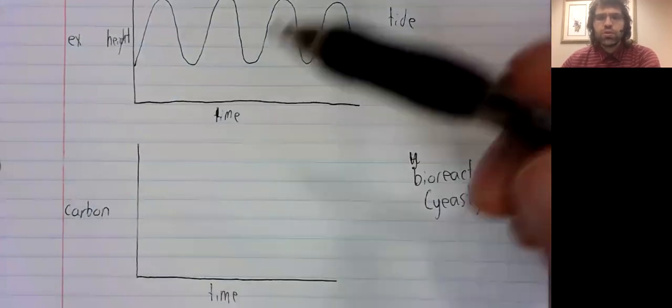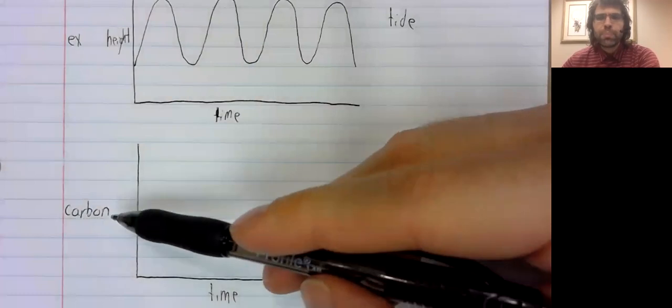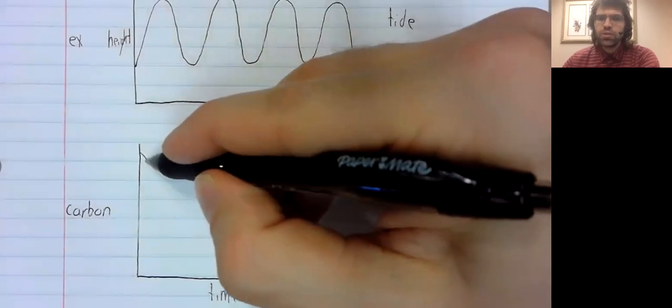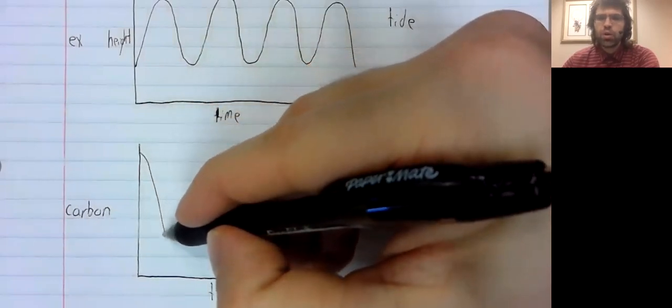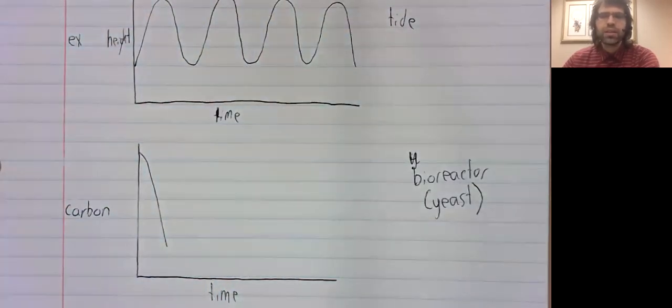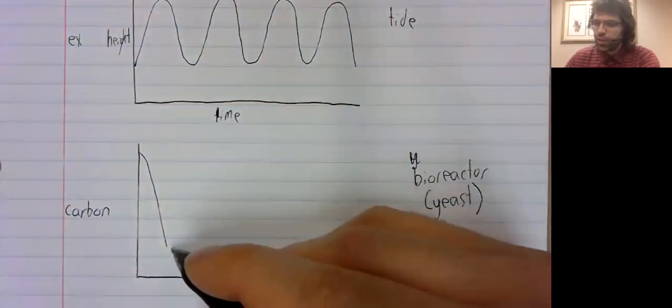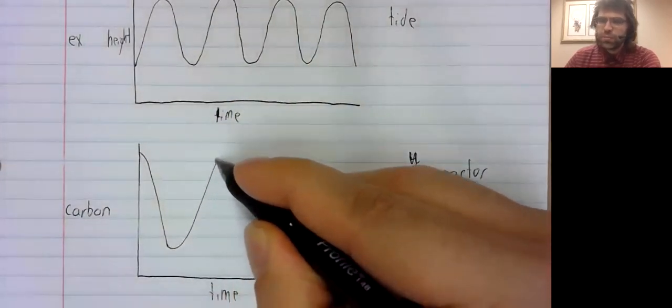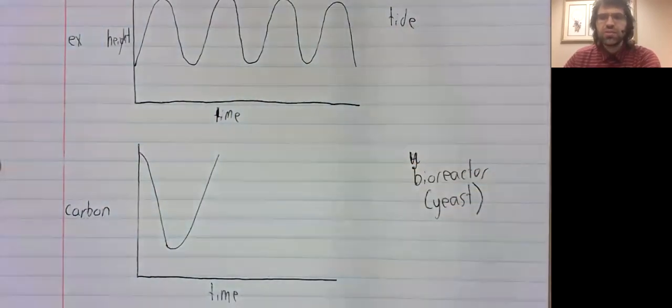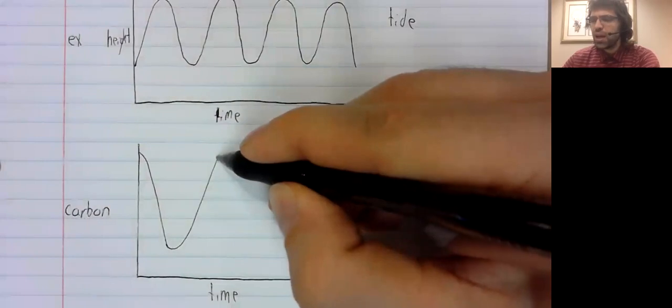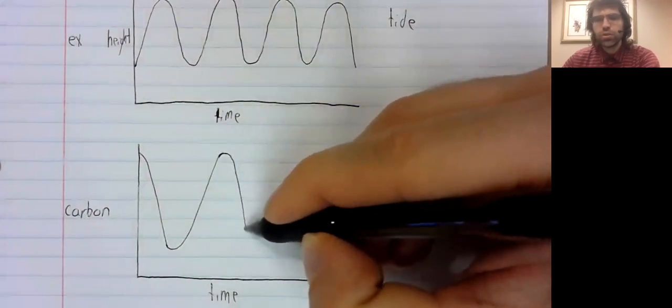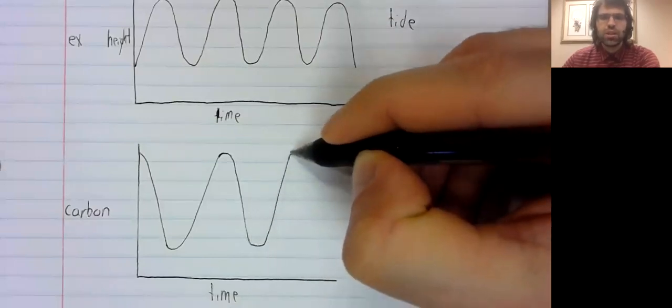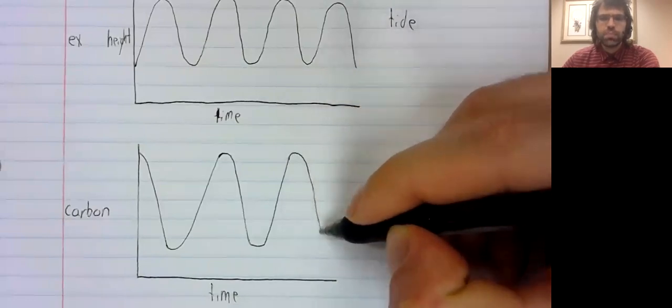Yeast cells use carbon to replicate. A lot of yeast cells replicate at once. The amount of carbon goes down. The carbon gets used up. The carbon replenishes. A bunch of yeast cells replicate at the same time. The carbon gets used up again. The carbon replenishes. The carbon gets used up again.